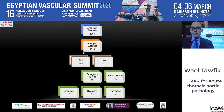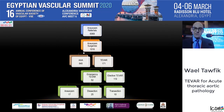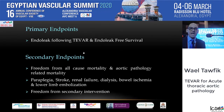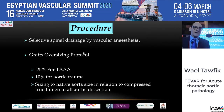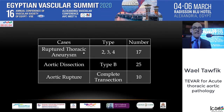In our own practice, we performed 171 TVARs, of which 52 were emergencies, including 17 ruptured thoraco-abdominal aneurysms, with the majority being dissections and transections. We performed selective spinal drainage and only oversized in cases of aneurysms — not for trauma or dissections. The spread of pathology included ruptured aneurysms, dissections, and ruptures.